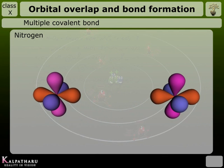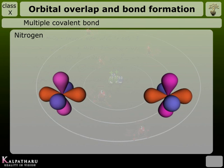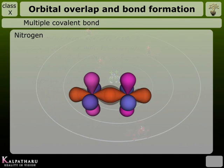The two 2pᵤ orbitals, one from each nitrogen atom, overlap end-on-end to give rise to a sigma bond.